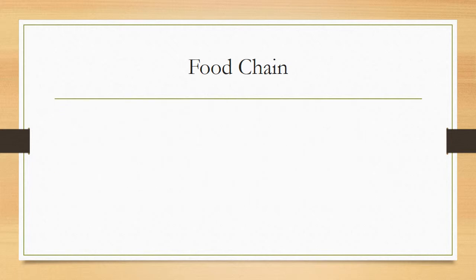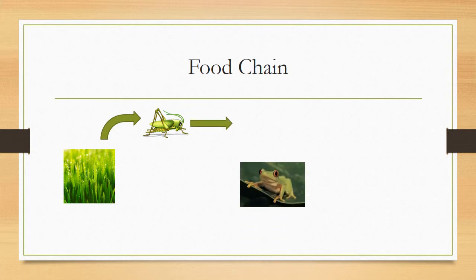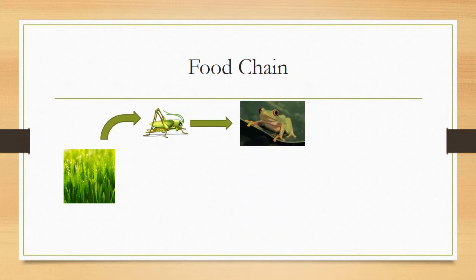It all starts with the producers. Producers make their own food through photosynthesis — they are anything that makes their own food. Then, primary consumers: they are smaller animals, or any herbivore, that eats the producer. Then secondary consumers eat the primary consumers — slightly larger animals, like a frog eating a grasshopper.